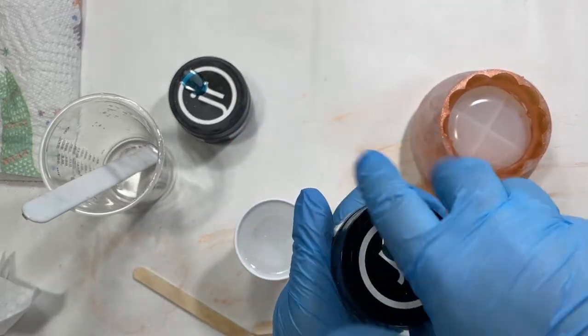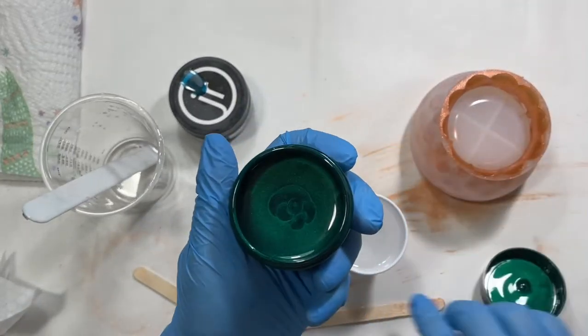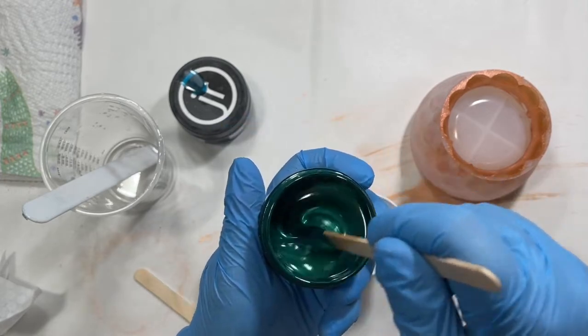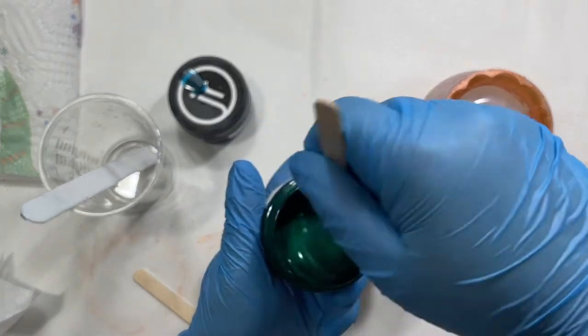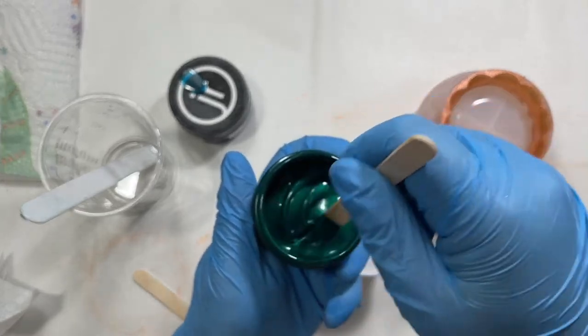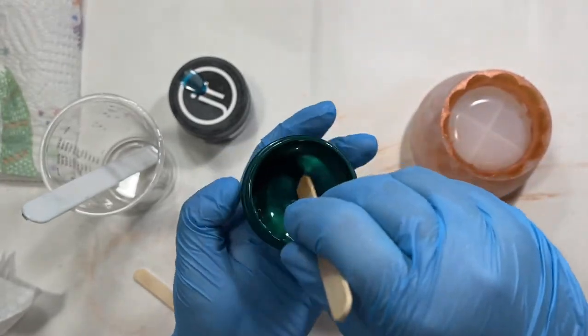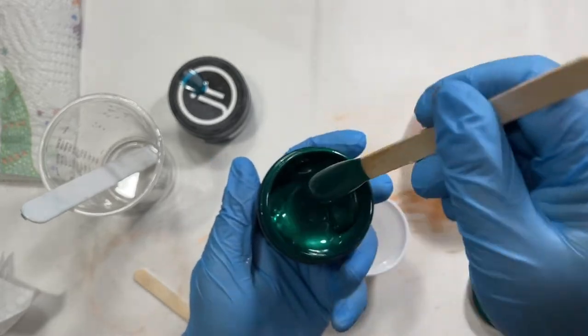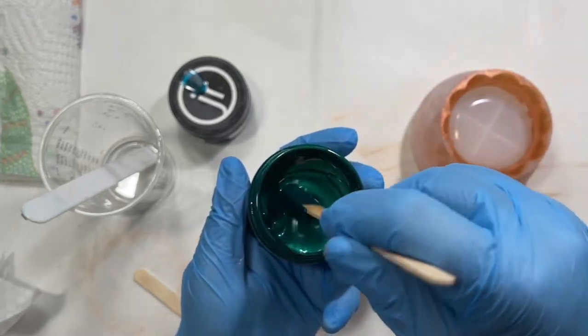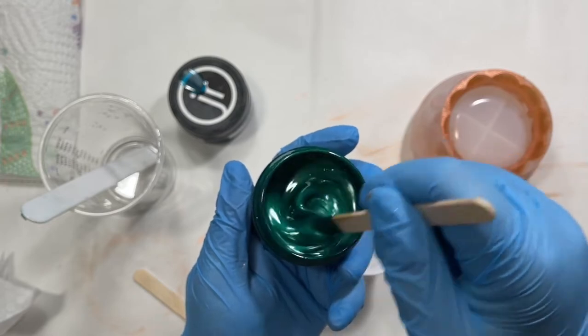I'm just going to grab a couple popsicle sticks. So these pigment pastes, you have to stir them up before you use them. A lot of times the pigment inside will settle down to the bottom. If you don't stir it you don't get nice even color.